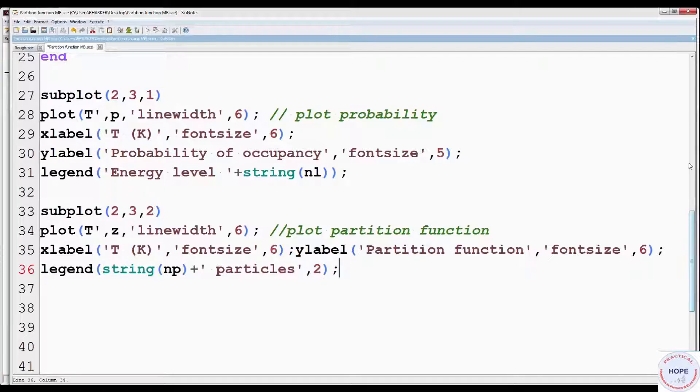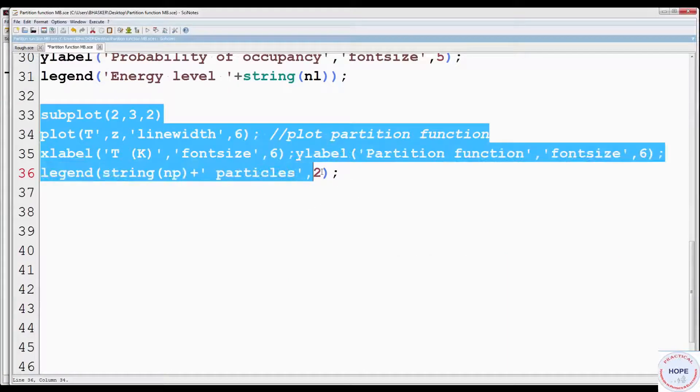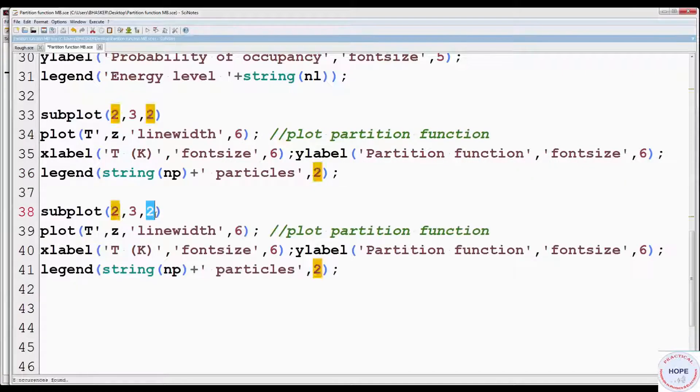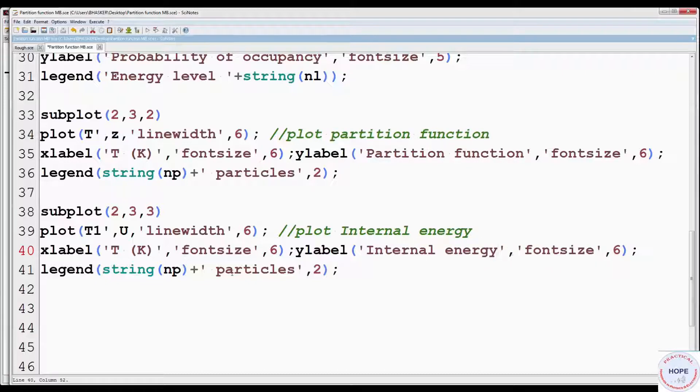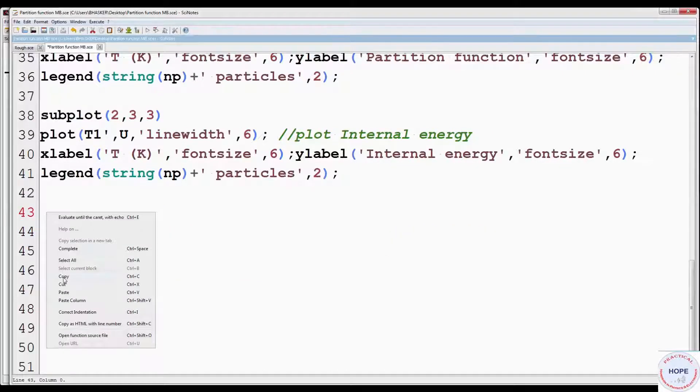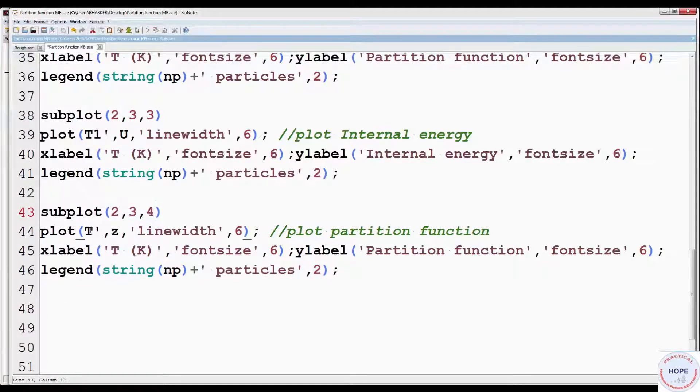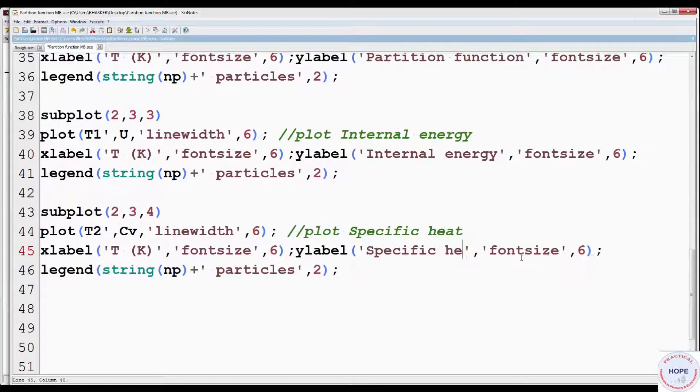Instead of writing subplot, plot, x label, y label and legends every time, let's copy from here and paste. Change plot position to 3. Change T to T1, Z to U since we have to plot internal energy. Change comment and Y label as shown. Again paste. Change plot position to 4. Instead of T we have to plot T2 with CV. Change comment to plot specific heat. Change Y label to specific heat. Change the position of the legend to 1.